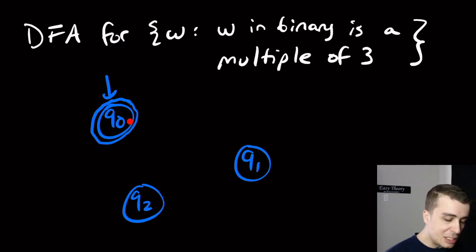If we see a 0 here, then that means that the remainder is going to be multiplied by 2. So if the remainder is 0, multiplying by 2, the remainder is still 0. So that means that we're going to stay here.